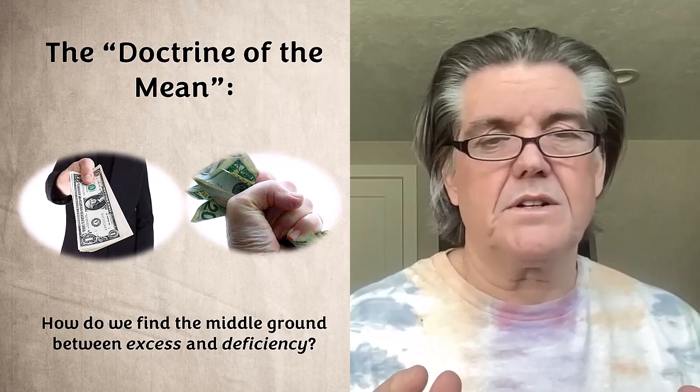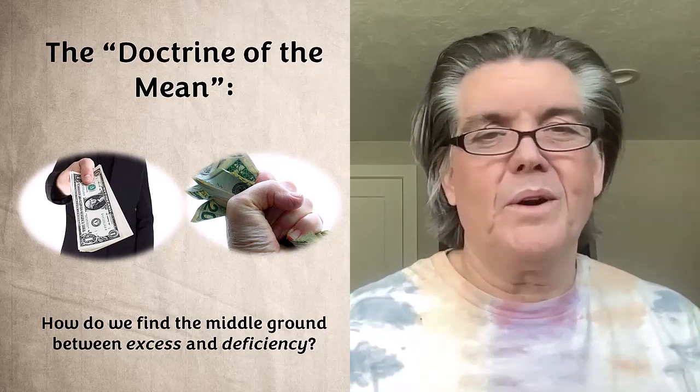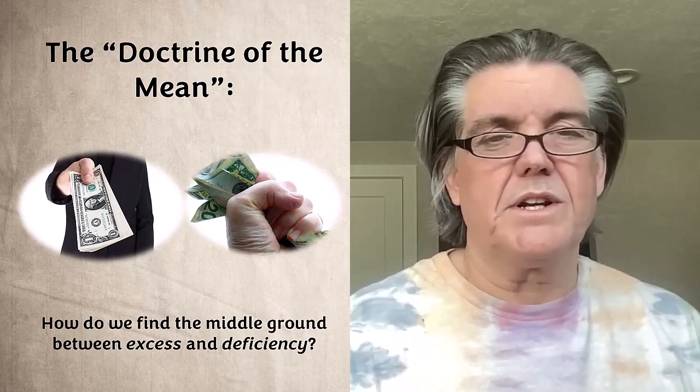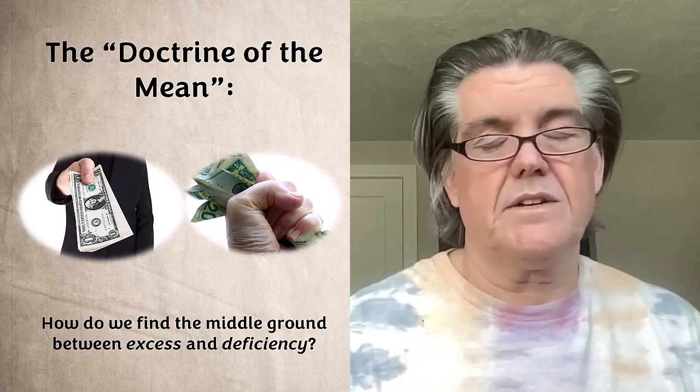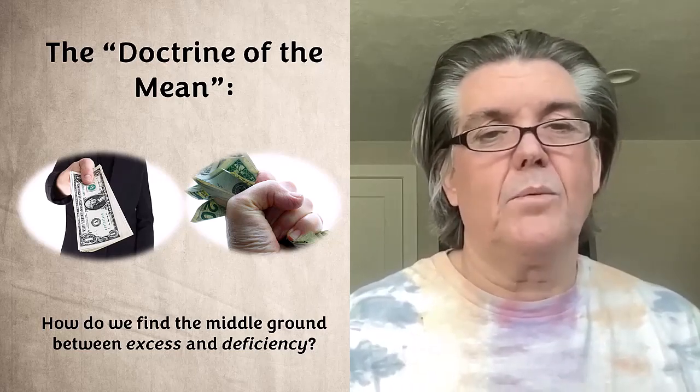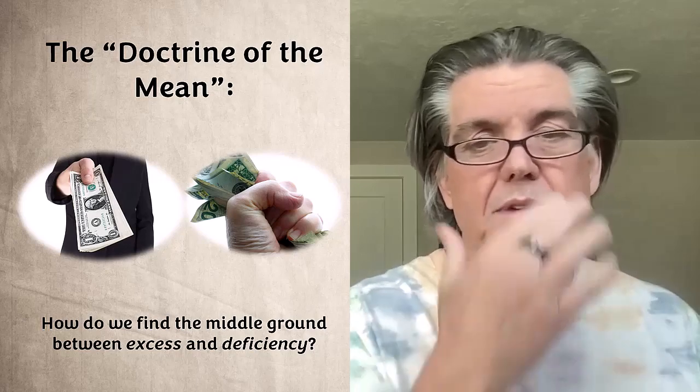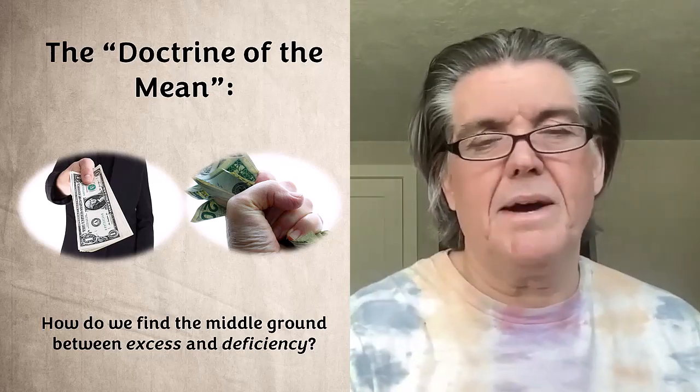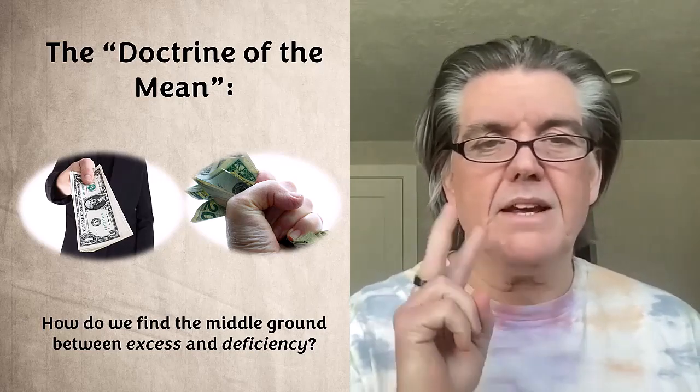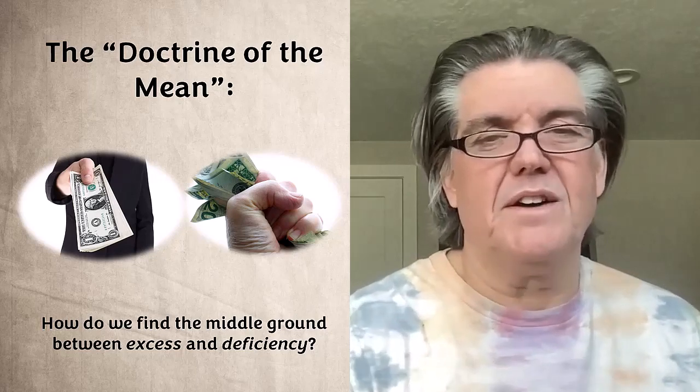So it's a quick rush through the doctrine of the mean and excess and deficiency as it relates to these virtues, these qualities of character. But don't worry, we'll spend a little more time on it because we're going to use this Aristotelian virtue thinking when we look at Spike Lee's movie, Do the Right Thing. So more about that to come. That's the sweet spot challenge of these virtues.